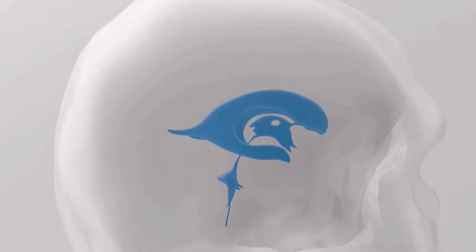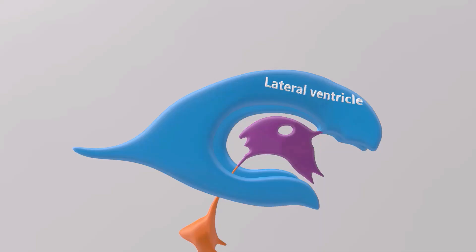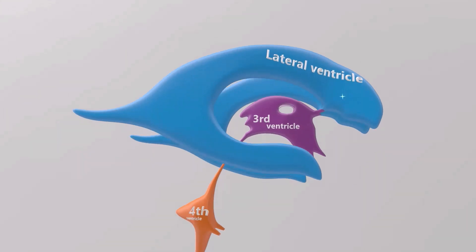I'm going to color code these ventricles. In blue we see the lateral ventricles — there's actually one on each side, it's bilateral. Each lateral ventricle kind of looks like a claw as if it's trying to grab something, and in the middle it's trying to grab this purple third ventricle. Beneath the third ventricle we have the diamond-shaped fourth ventricle. So we have the lateral ventricles in blue, the third ventricle in purple, and the fourth ventricle in orange.